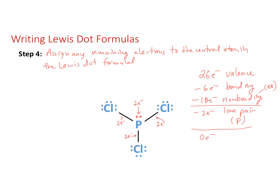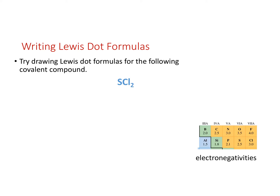Here's one for you to try — drawing the Lewis dot formula for sulfur dichloride. Sulfur is neon 3s² 3p⁴ for six valence electrons, and chlorine is neon 3s² 3p⁵ for seven valence electrons. With two chlorines: 14 electrons from chlorine plus six from sulfur gives 20 total electrons to assign.